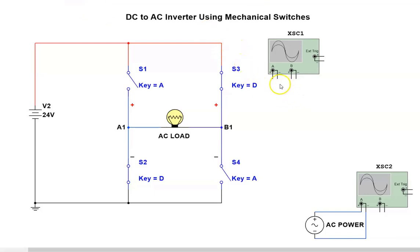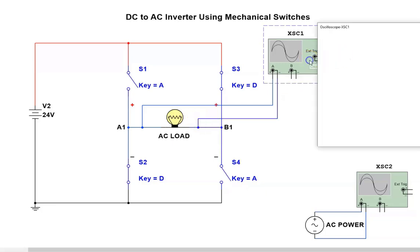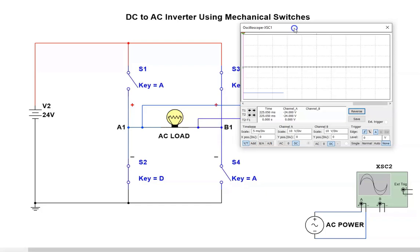Now I'm going to connect up this oscilloscope and try to make an inverter happen with my keyboard. We'll see how it all works out — I'll open it up here, and we can see that we already have one switch on.